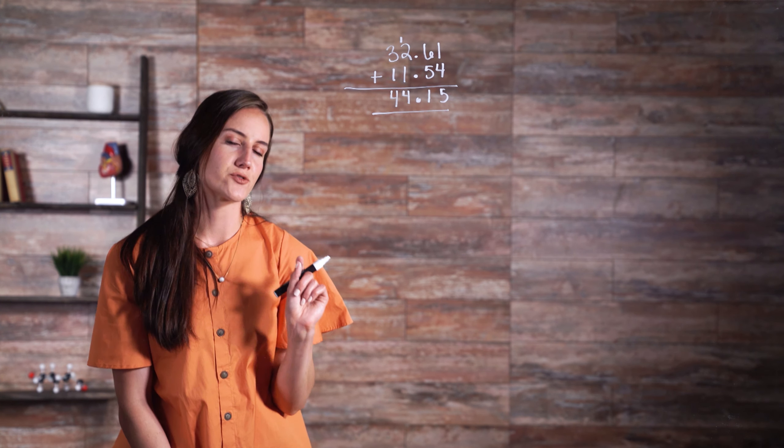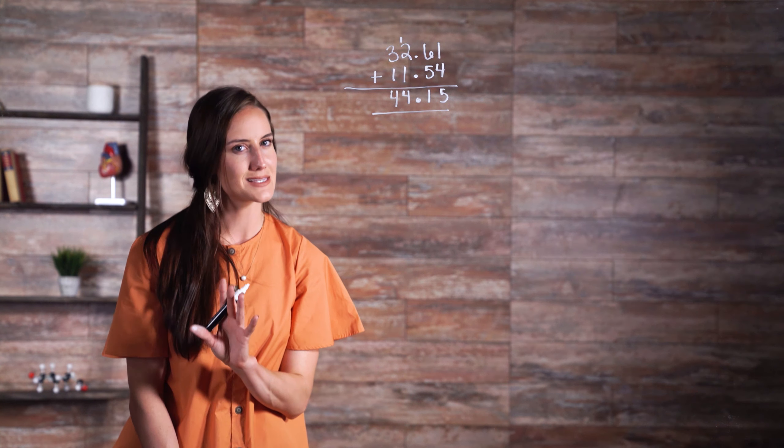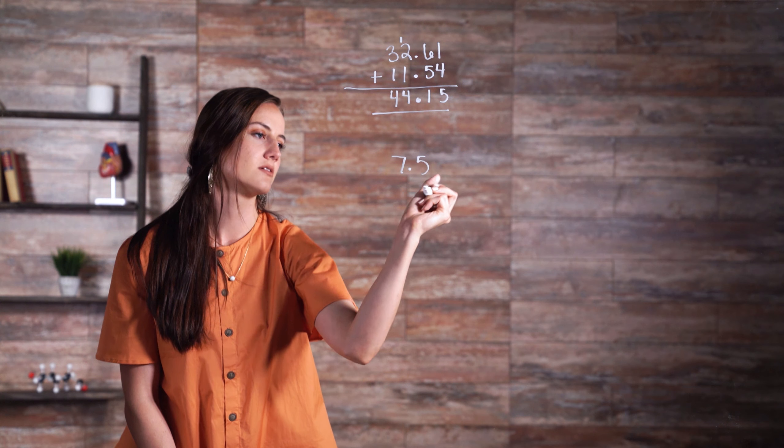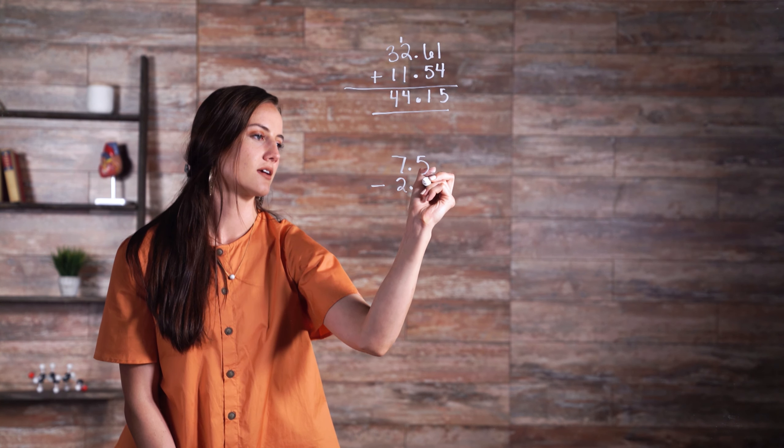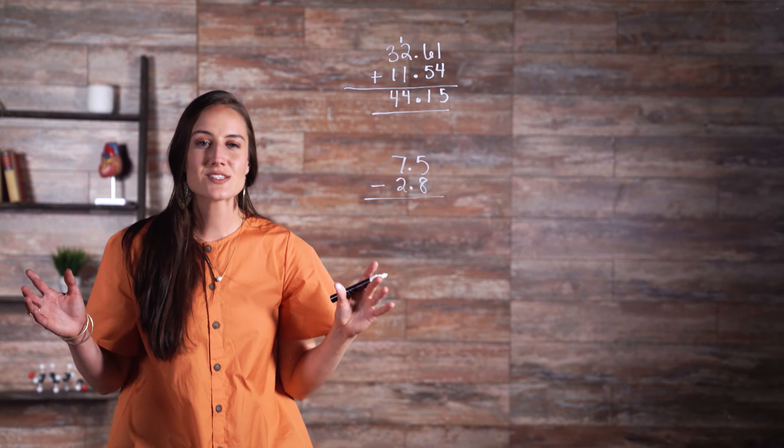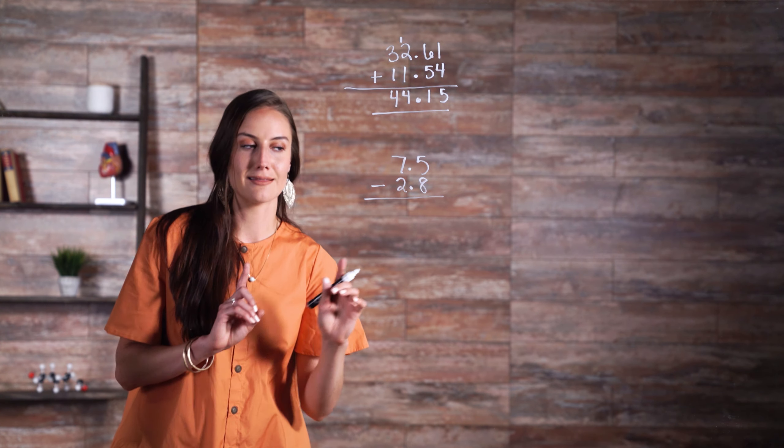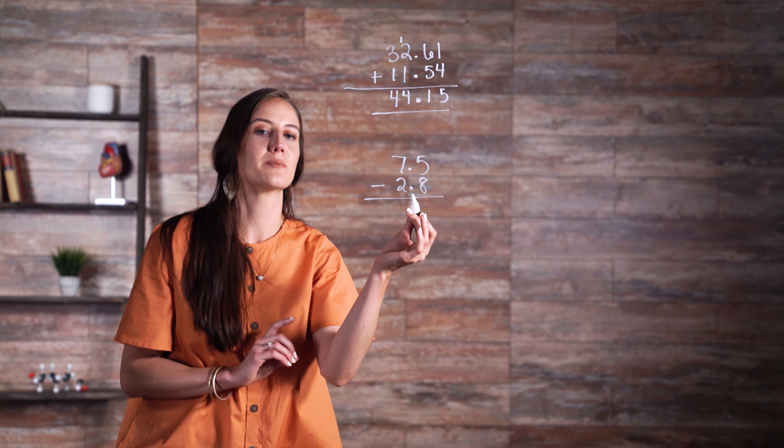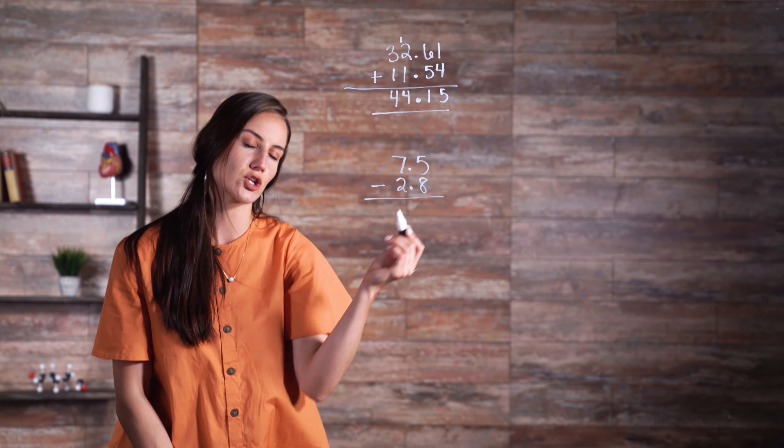Let's move over to subtraction. We'll start with a simple problem: 7.5 - 2.8. Just as with addition, the first step is to line up the numbers with the decimal point in the same place.